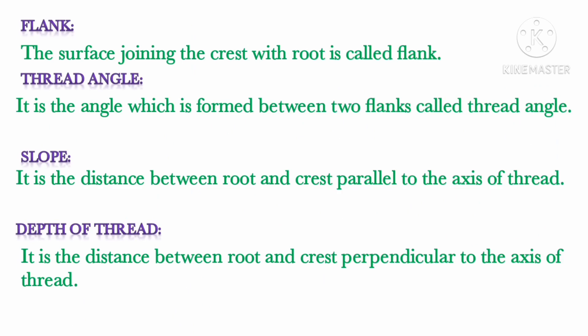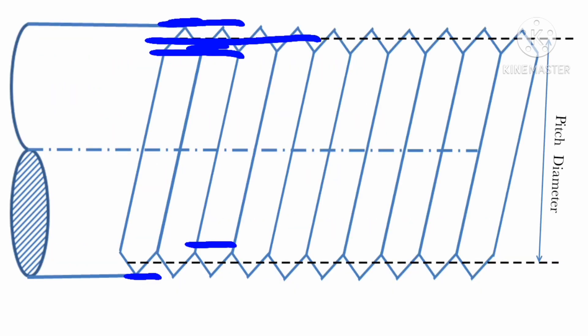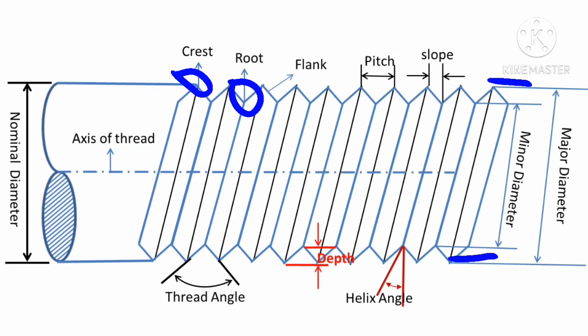Next is flank. The surface joining the crest with the root is called the flank. It is the surface between the crest and the root, or the surface which connects the crest and the root to each other.